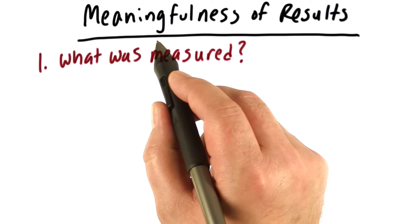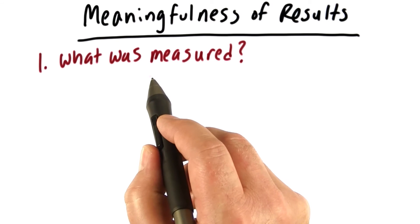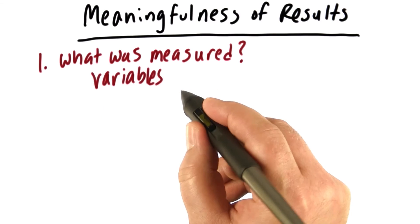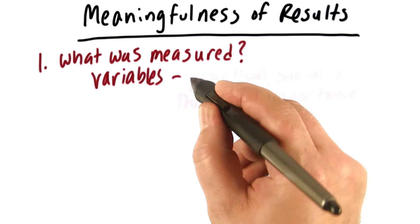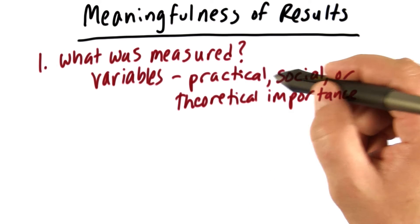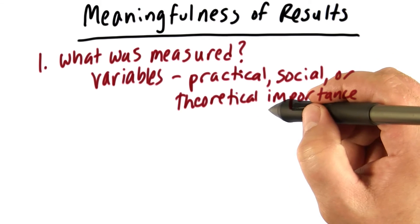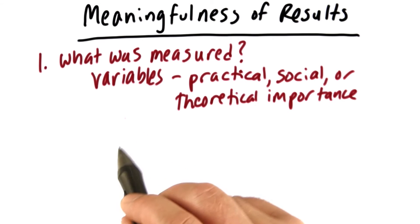So how do we know if the results of a research study were meaningful or important? One thing we have to know is what was measured? What were the variables? Did the variables have practical or social importance, or even theoretical importance? Obviously, if our variables do not have any importance in terms of practical application, social issues, or theory, then clearly it doesn't matter what the results were, the results are not important.